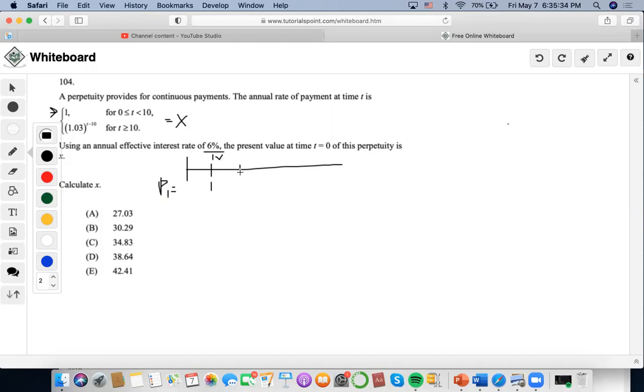We also know that the annual effective rate is 6%. It doesn't say it's a perpetuity due. It just says that there's payments of one starting at time one. So payments of one are discounted back one, and so on, up until the point that it just ends at nine, not 10, because t is less than 10.